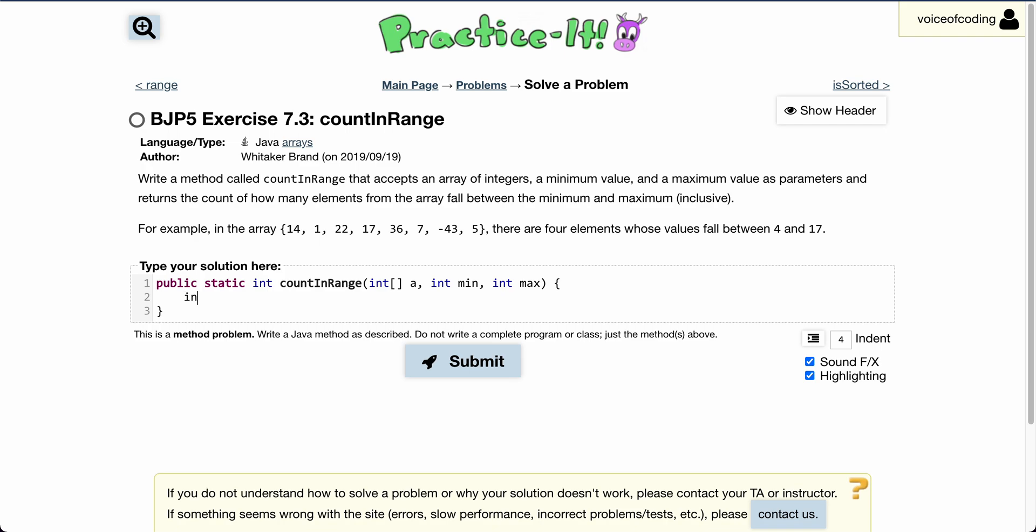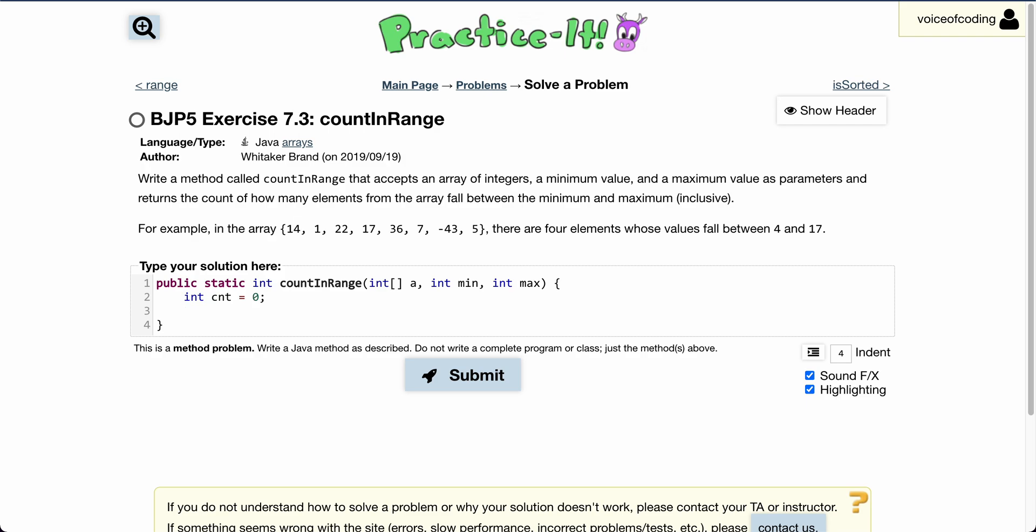First, we need a variable to keep track of the number of elements that fall in the range. We can just go through the array and check each element.